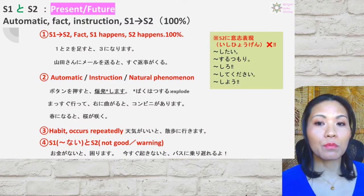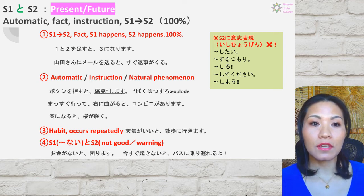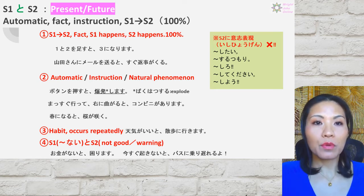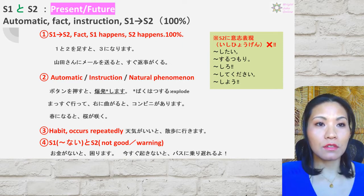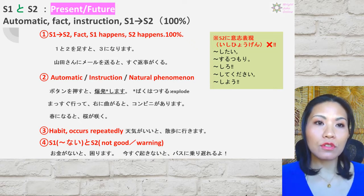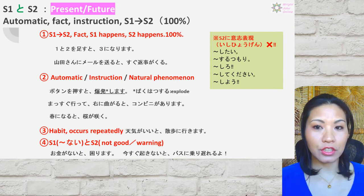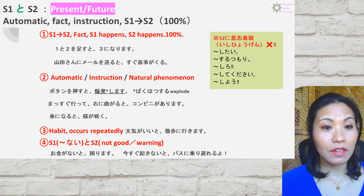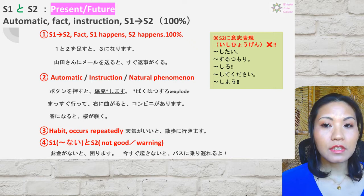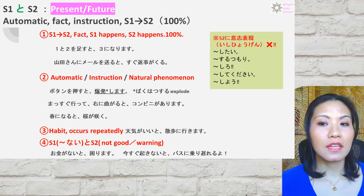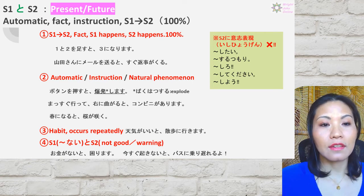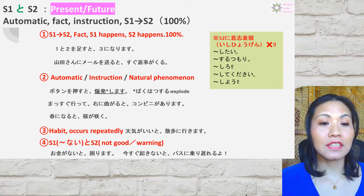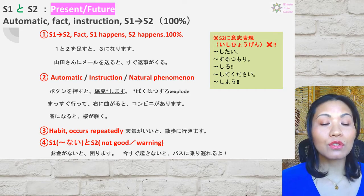Let's start with と in present/future. The structure is: sentence one + と + sentence two. Present/future means sentence two is in present or future tense. と's characteristic is automatic, fact, and instruction — when sentence one happens, sentence two is going to happen 100%. These are called 意思表現: 食べたい、食べるつもり、食べろ、食べてください、食べよう, and with と you cannot use 意思表現 in sentence two.